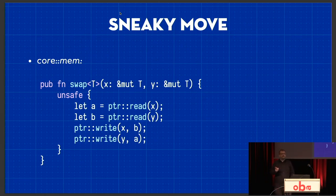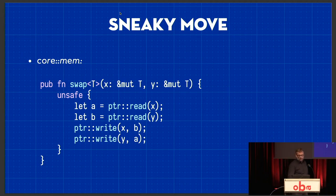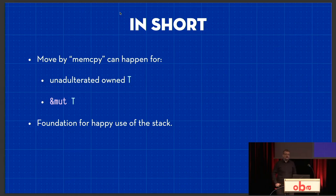But you can still, if you have a pointer on the heap or wherever — because you can obviously also have a pointer to something on the stack — you can still move it, you just have to be a bit sneaky about it. This is what core or std::mem has this function here, swap, which basically takes two mutable pointers and just exchanges whatever is there. It actually does exactly a move — it copies the bits. So pointer::read reads whatever is behind the pointer into A, and then we'll later write it back to B. So crucially, we can move things by memcopy if we have an unadulterated owned T — not a T stuck into a pointer but an actual T — or we have a mutable reference to it.